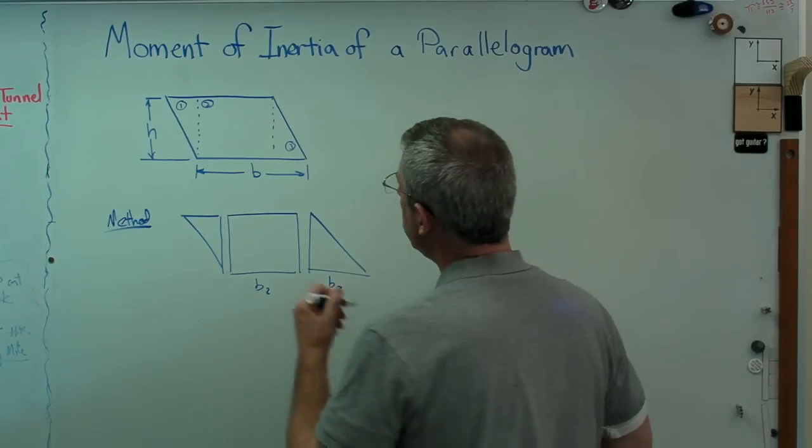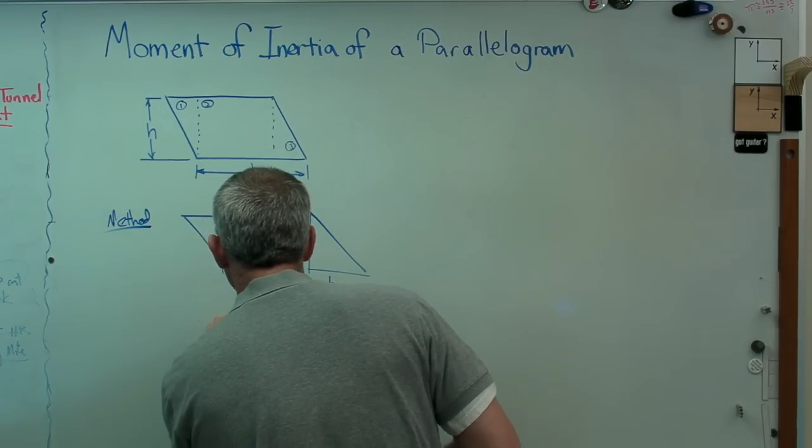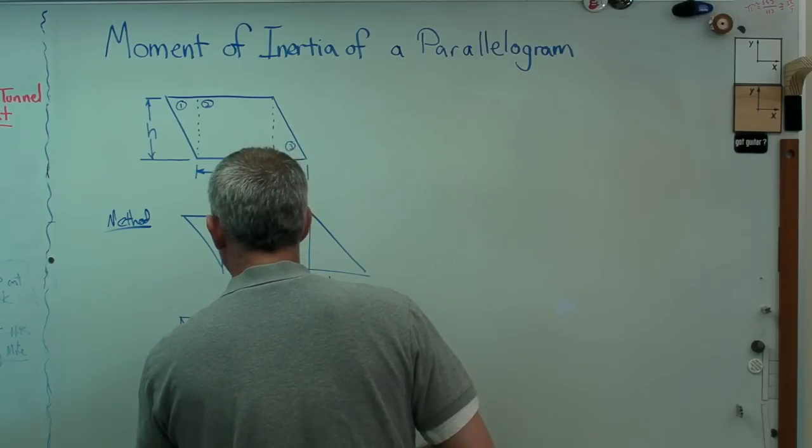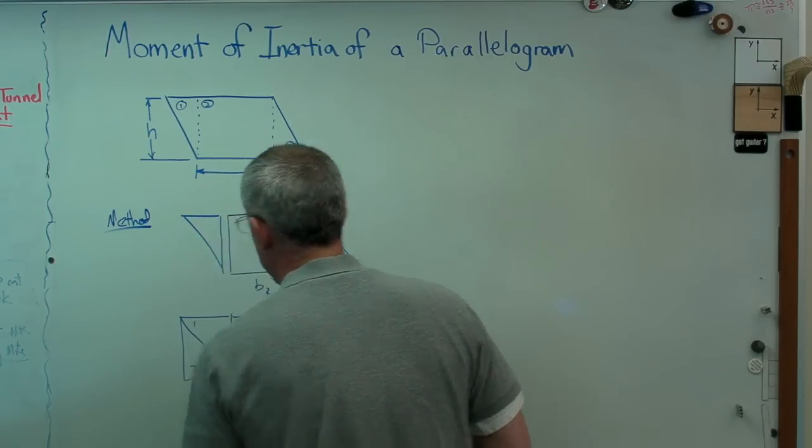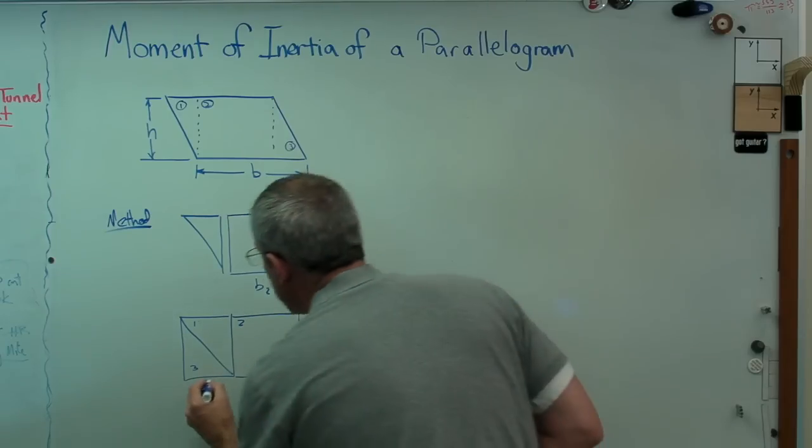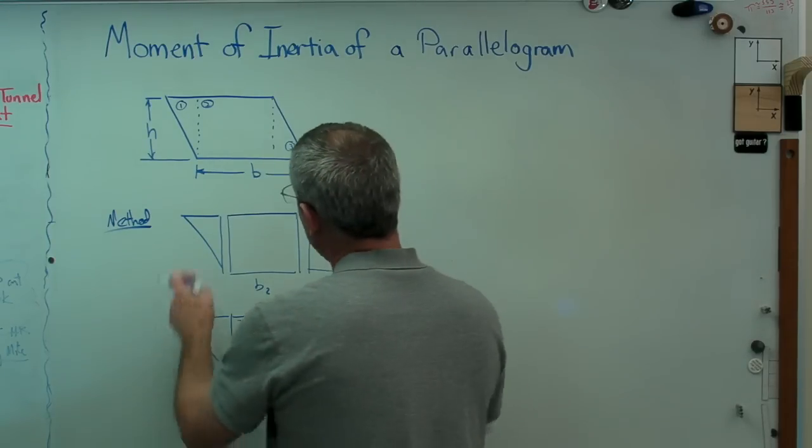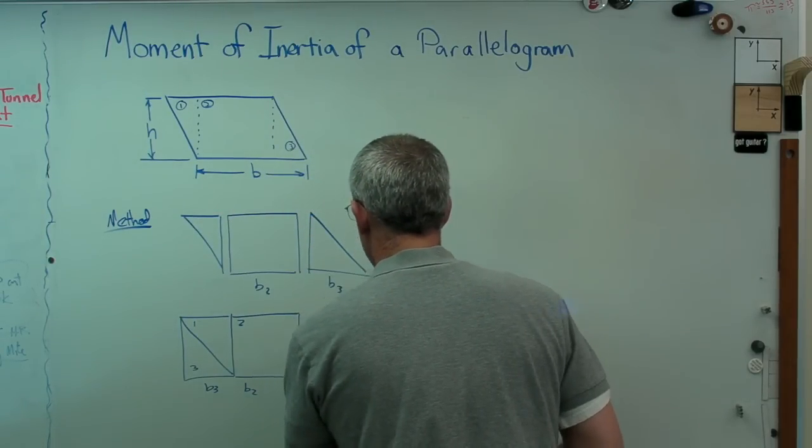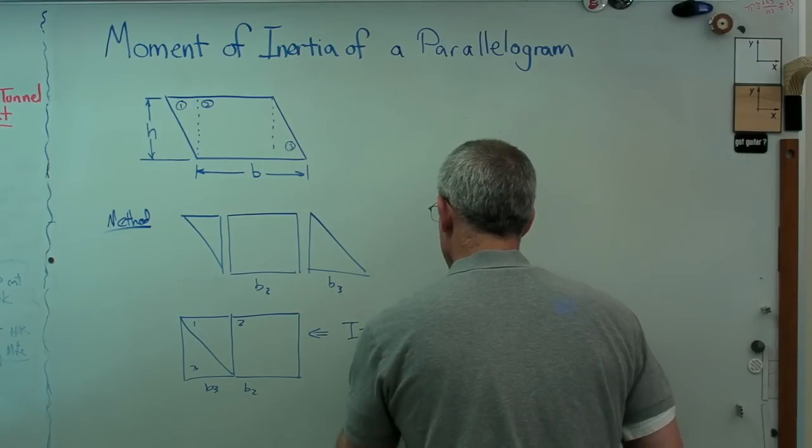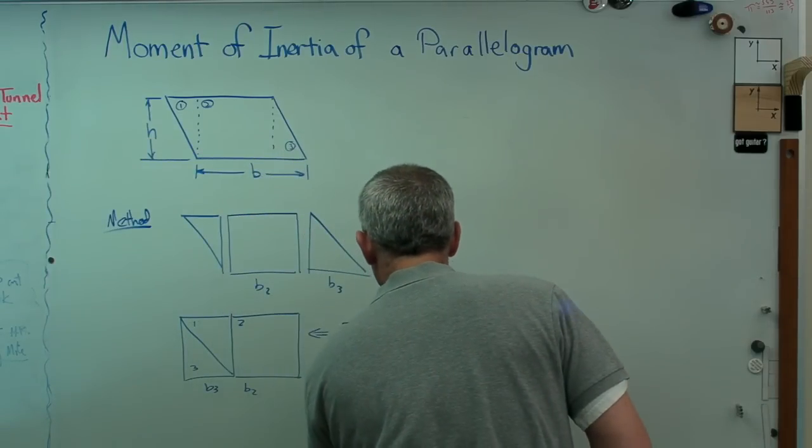I'll show you here in a minute what we're talking about doing, but if I take that, I can also draw it this way if I like. That's now one, that's two, and that's three. This is b3 and that's b2. And b2 and b3 equal b total, so from there I is 1/12 (b2 + b3) h cubed.